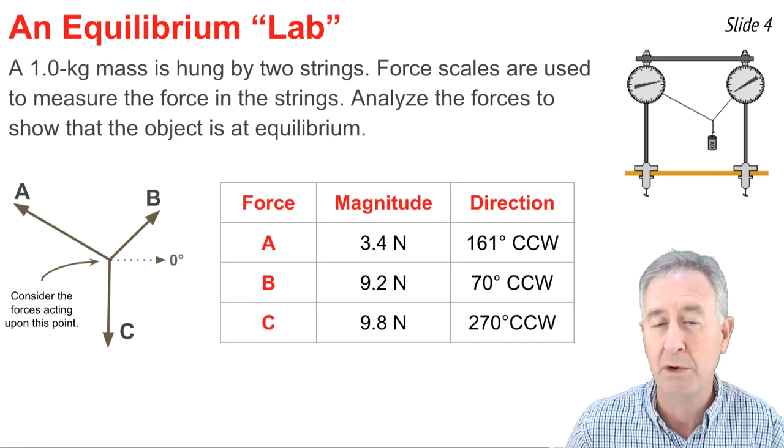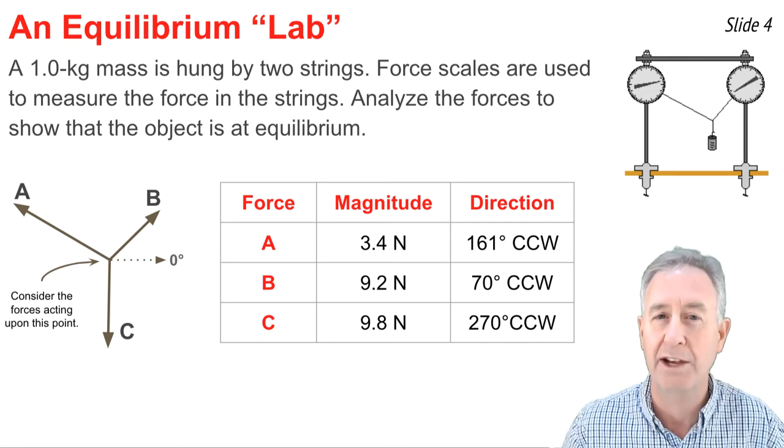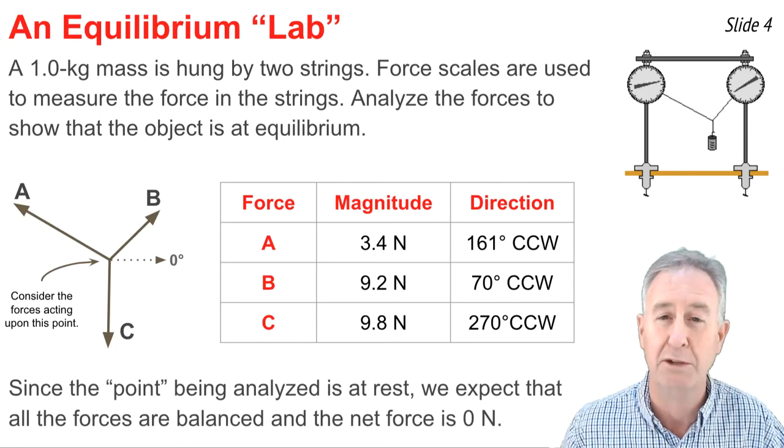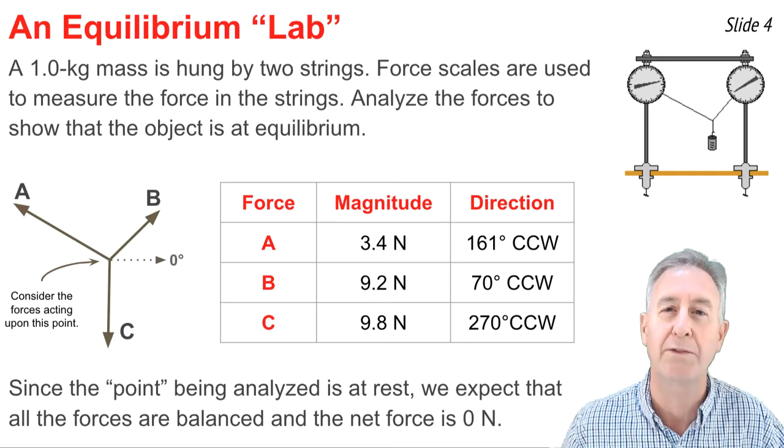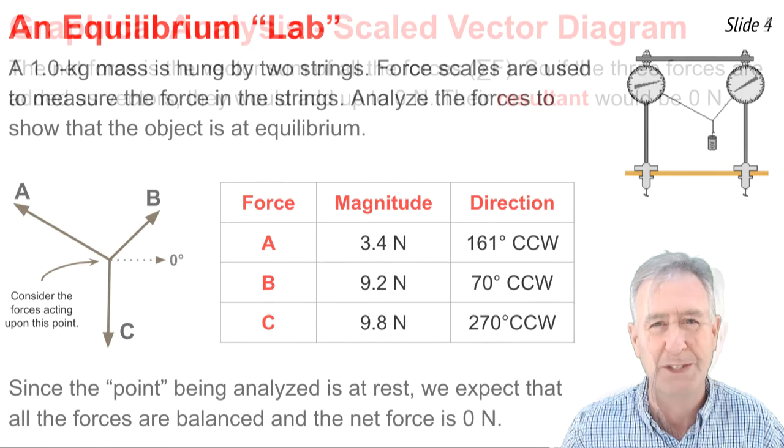Now, the point on the string where these three forces are acting upon is at rest and staying at rest, so we expect that it's a point that's at equilibrium. So as we do our analysis, we're expecting that the forces will come out to add up to zero newtons.